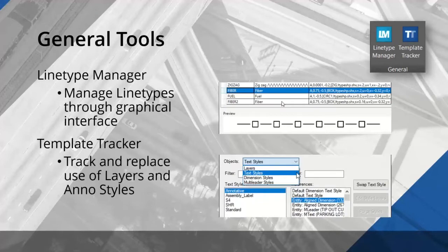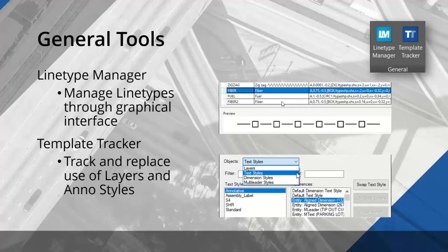We have another tool called Template Tracker — this is probably one of the most popular tools in the suite. It allows you to track and replace layers, text styles, and annotation styles — specifically text, dimension, and multi-leader styles. These core elements of your templates tend to be referenced all over the place, in Civil 3D styles, objects in the drawing, and any number of places. Template Tracker tells you where everything is being used and allows you to quickly swap it out or change it at once.